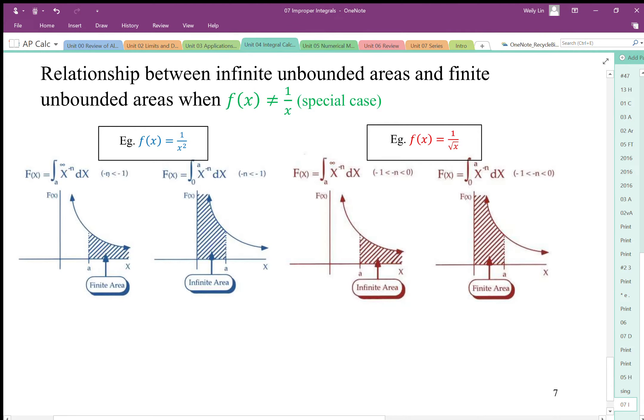So if n is less than negative 1, so for example 1 over x squared, 1 over x cubed, when the denominator power gets larger, we're looking at the blue case here.